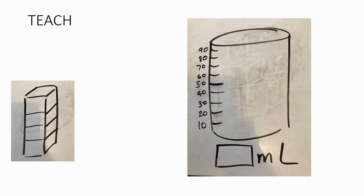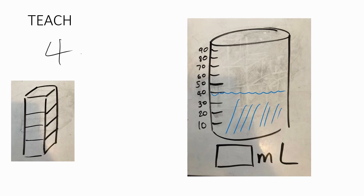We're in the teach phase. Let's start off with 40 millilitres of water. Here you've got 40 millilitres of water. And we've got this wonderful object over here, which is actually 4 centimetres cubed — 1, 2, 3, 4. So this is 4 centimetres cubed.